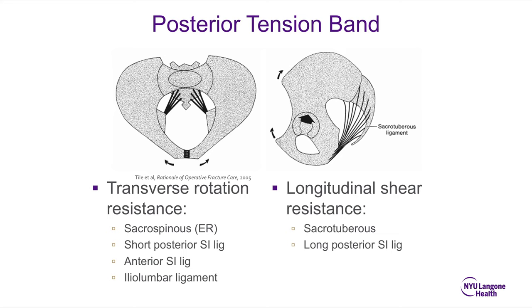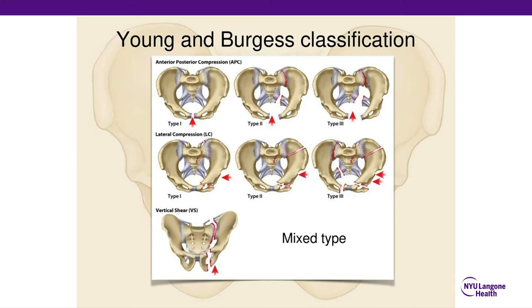For longitudinal shear resistance, the sacrotuberous ligament is of greater importance as it runs vertically, providing vertical stability to the pelvic ring. The pelvic ring injury classification includes APC, lateral compression, and combined mechanism types. The APC 1, 2, 3 differences were discussed. Lateral compression injuries are also classified as 1, 2, and 3. LC1 is a simple or complex lateral compression injury, usually with an anterior ring injury in the form of a superior and inferior ramus fracture, and a posterior lateral sacral alar compression fracture.